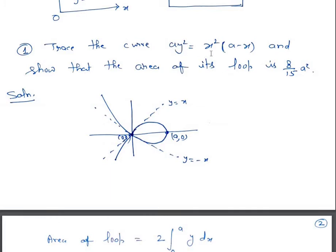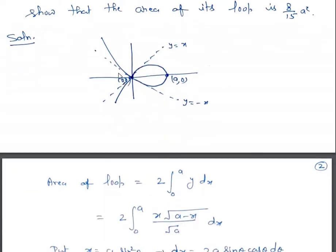Because powers of y are even, the curve is symmetric about the x-axis. If you put y = 0, we get x = 0 and x = a. Tangents at the origin are y = ±x, so the origin is a node. The curve will not exist when x > a because in that case y² would be negative. So the shape of the curve forms a loop, and we have to find its area.